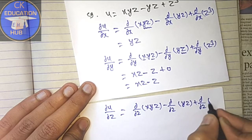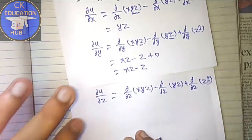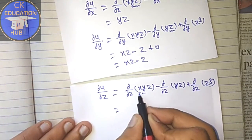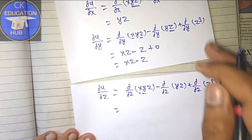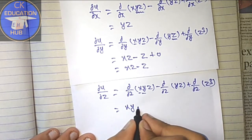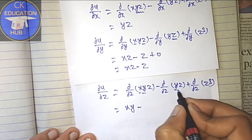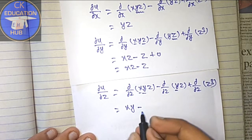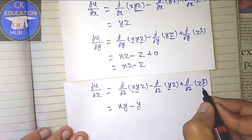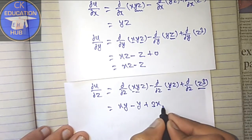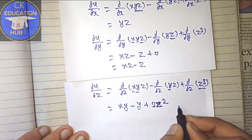Now differentiate with respect to z: del u / del z = del/del z(xyz) - del/del z(yz) + del/del z(z³). Here x and y are treated as constants, so the derivative of xyz is xy. The derivative of yz is y, since y is constant. The derivative of z³ is 3z². So del u / del z = xy - y + 3z².